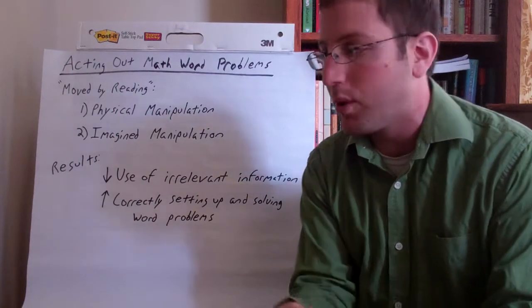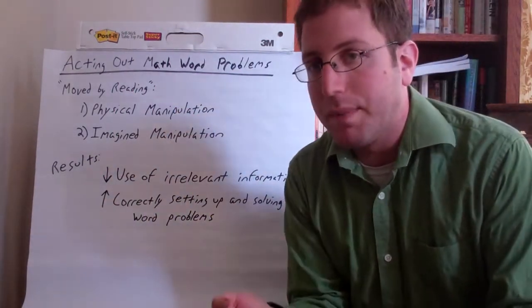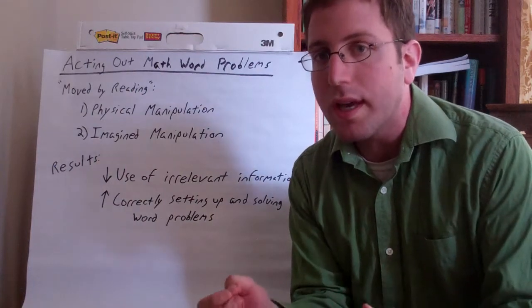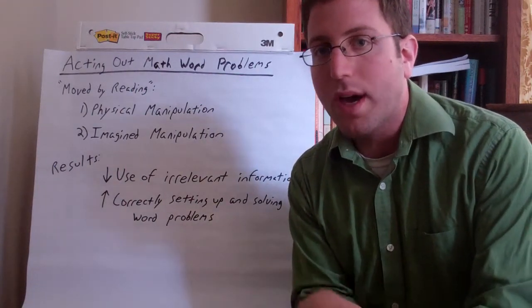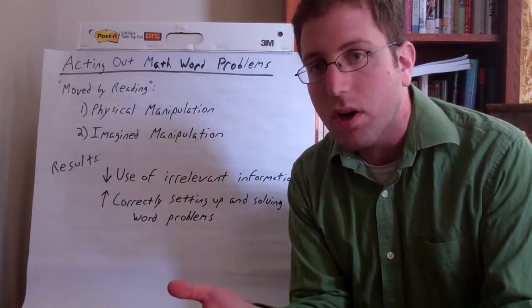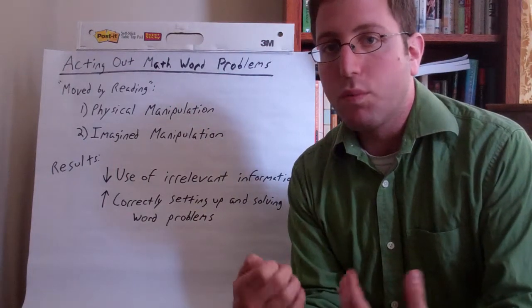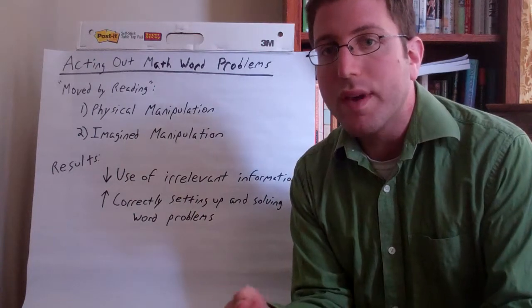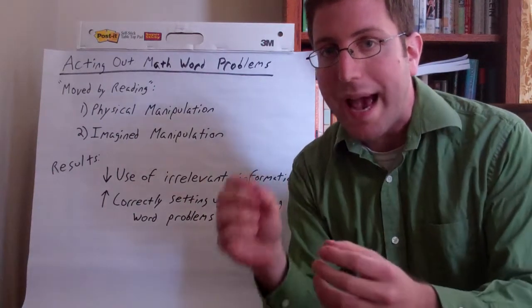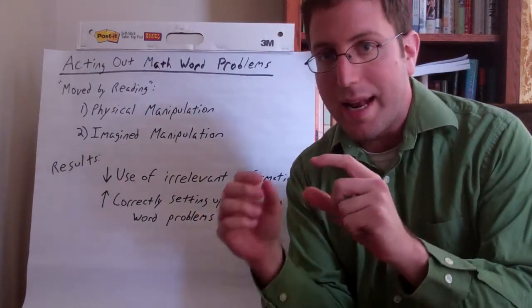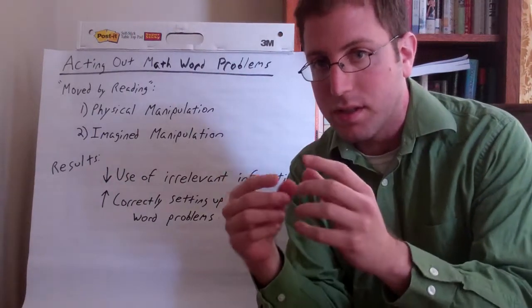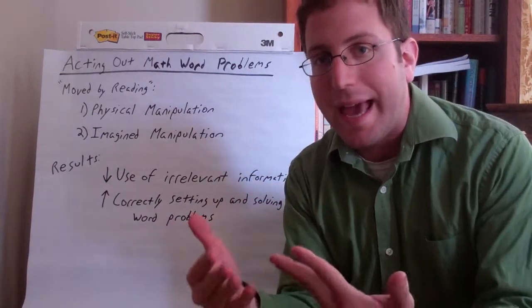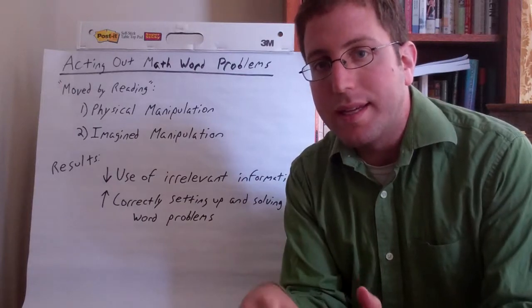Moved by reading has two main components. First, physical manipulation. That's when students are literally actually acting out what's going on in text. The example they give in the article is if you had a word problem or just a reading text about a farmer moving in bales of hay, students would actually take a toy farmer and actually move the toy bales of hay as a way of acting out what's going on in the text.